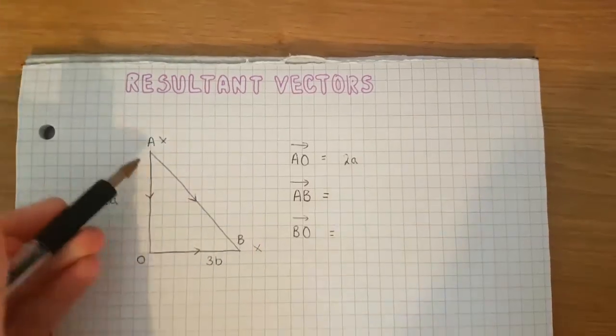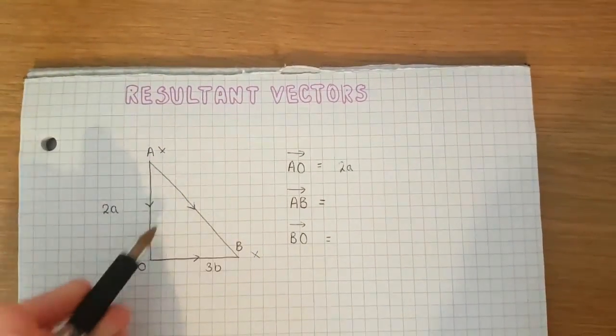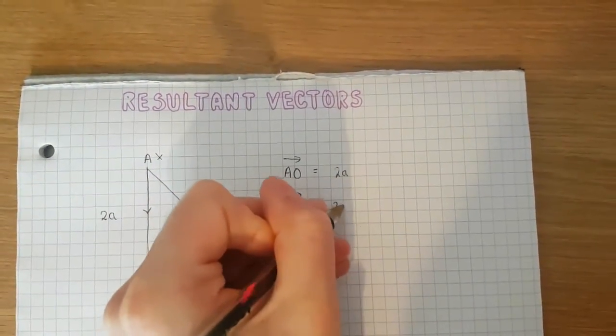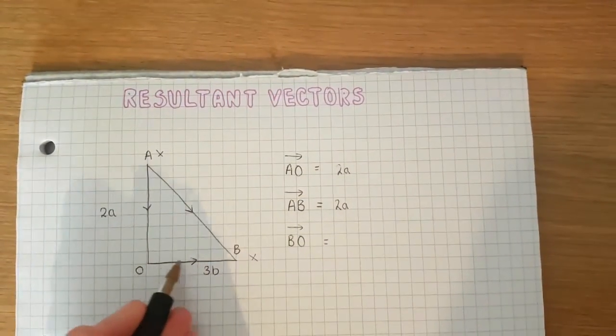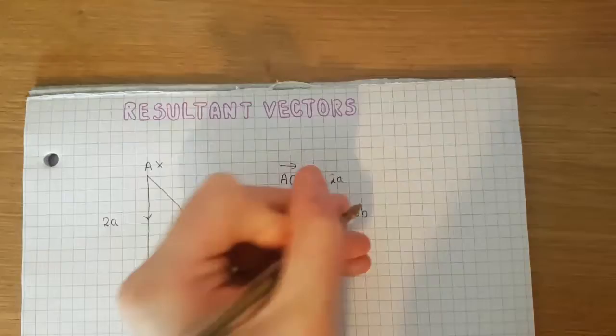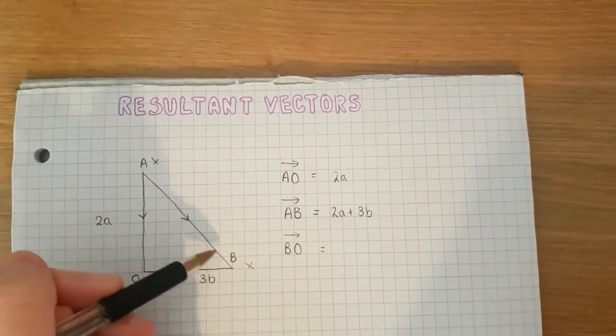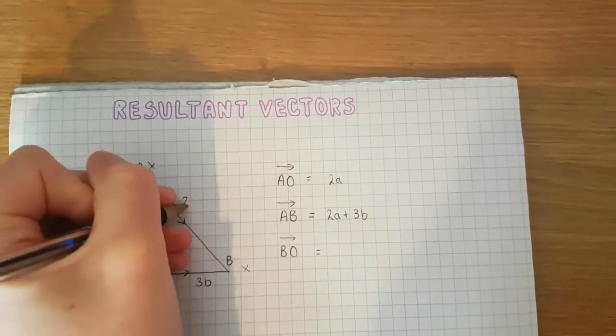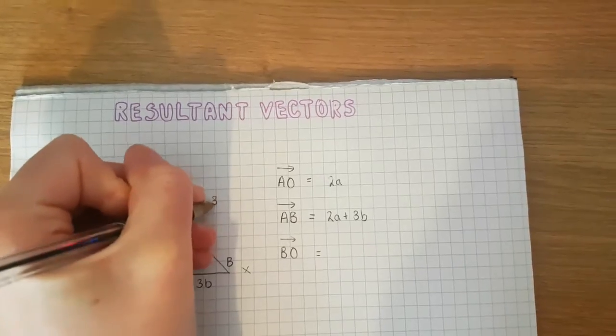So instead of going this way, I've got 2a, and then I'm adding on 3b to get to point B. So this vector here, A to B, can be described as 2a plus 3b.